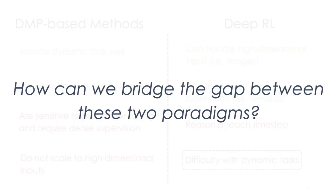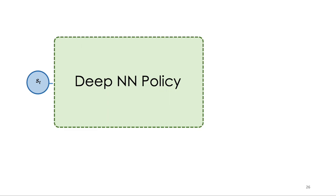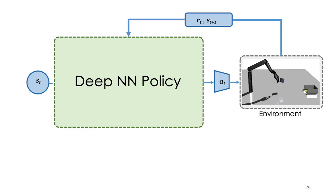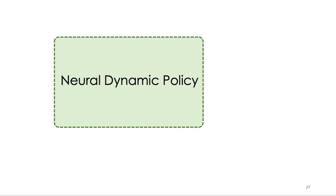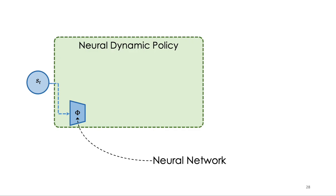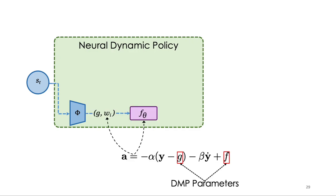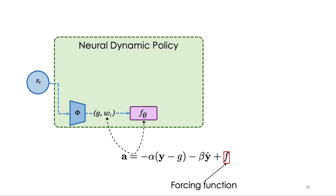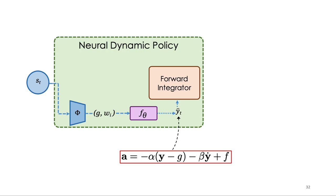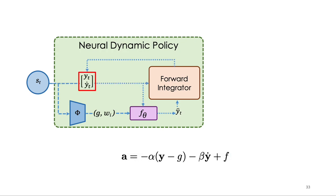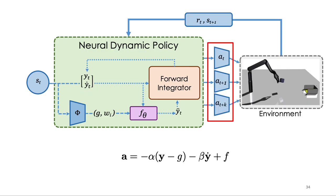So how can we bridge the gap between these two different paradigms? In current methods, a state input is given to a black-box network, which outputs an action that is executed in the environment. In contrast, instead of the black-box network, we propose embedding a dynamical system inside the policy. We call our method Neural Dynamic Policies, or NDPs. We embed the dynamical system that describes Dynamic Movement Primitives. Given an input state, a network is used to obtain parameters for the dynamical system. NDPs parameterize the trajectory via the parameter G, which represents the goal, and the forcing function F, which captures the shape of the trajectory. A forward integrator then uses these DMP parameters and outputs the trajectory to follow. We can then use this trajectory to output actions for the robot to execute in the environment.